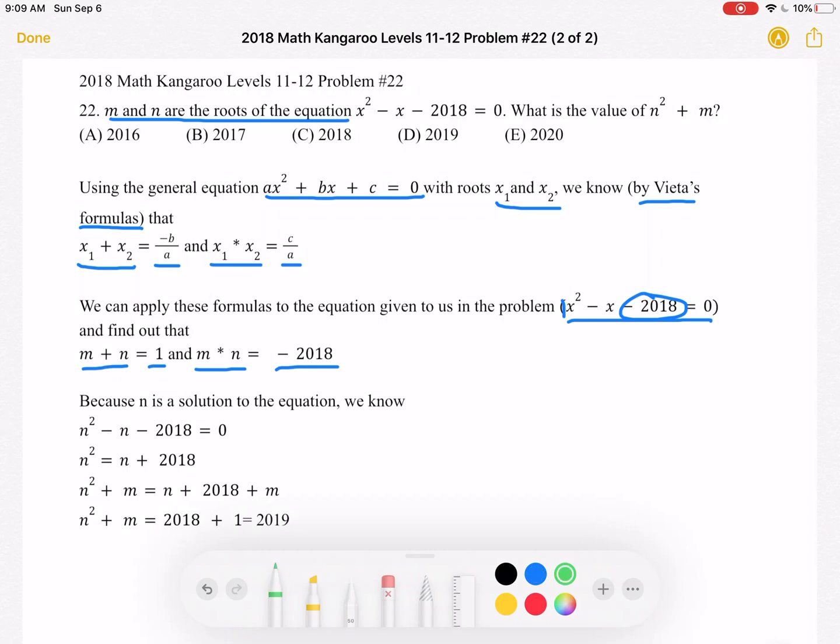Now, because we know that n is a solution to the equation, if it's a solution to this equation, that means that if we plug in n for x, we should get 0, right? Because it's a root. So n² - n - 2018 = 0.